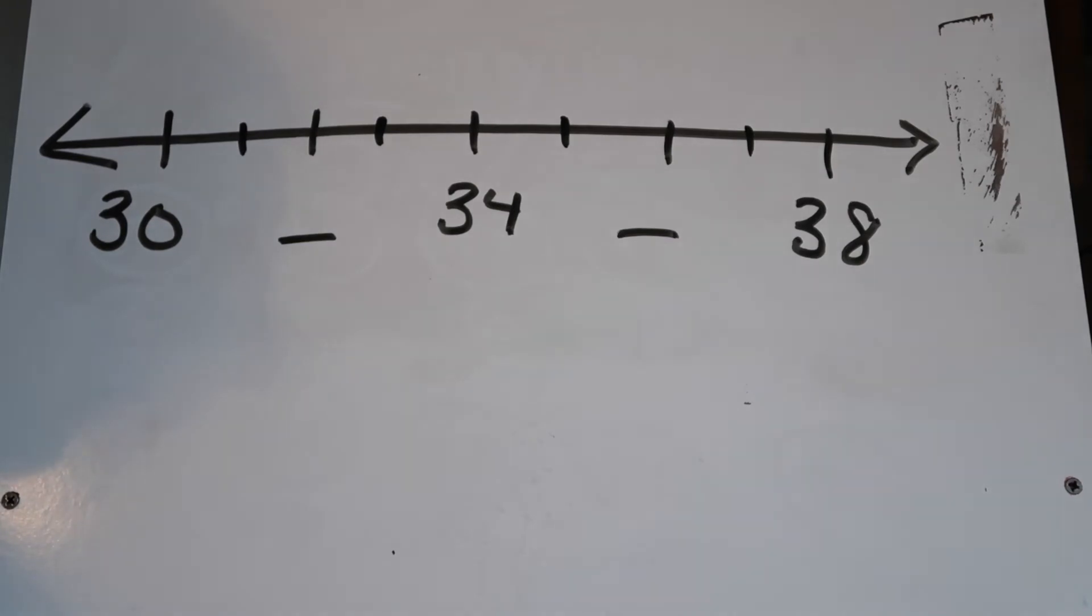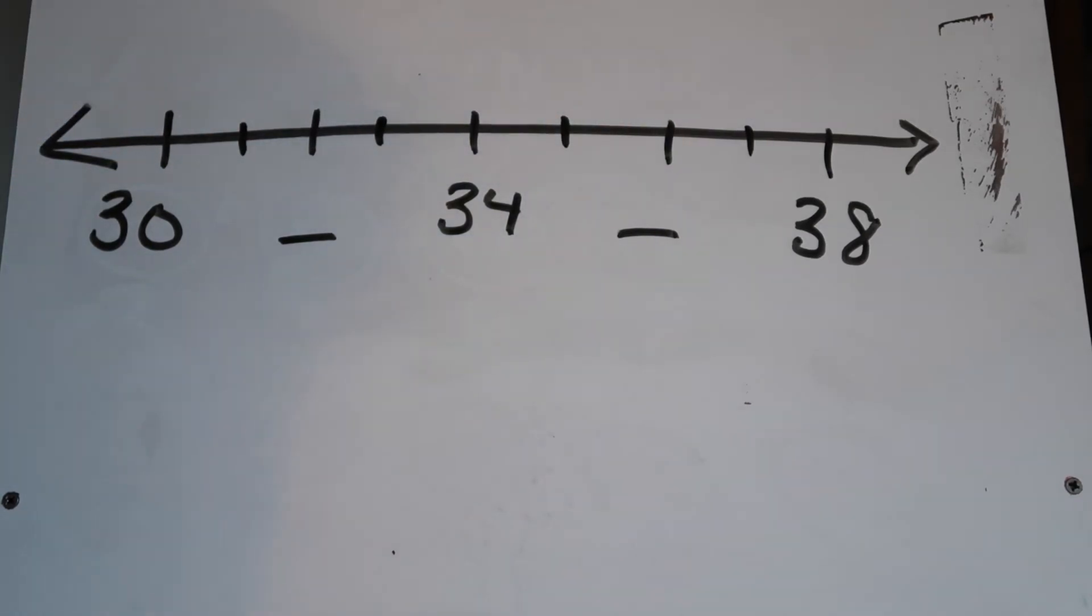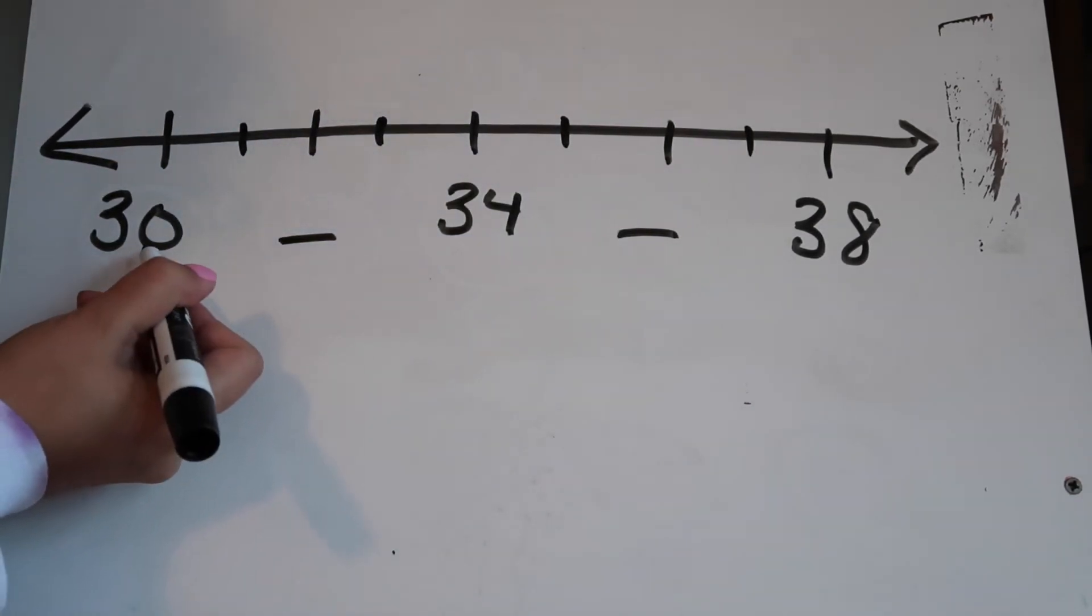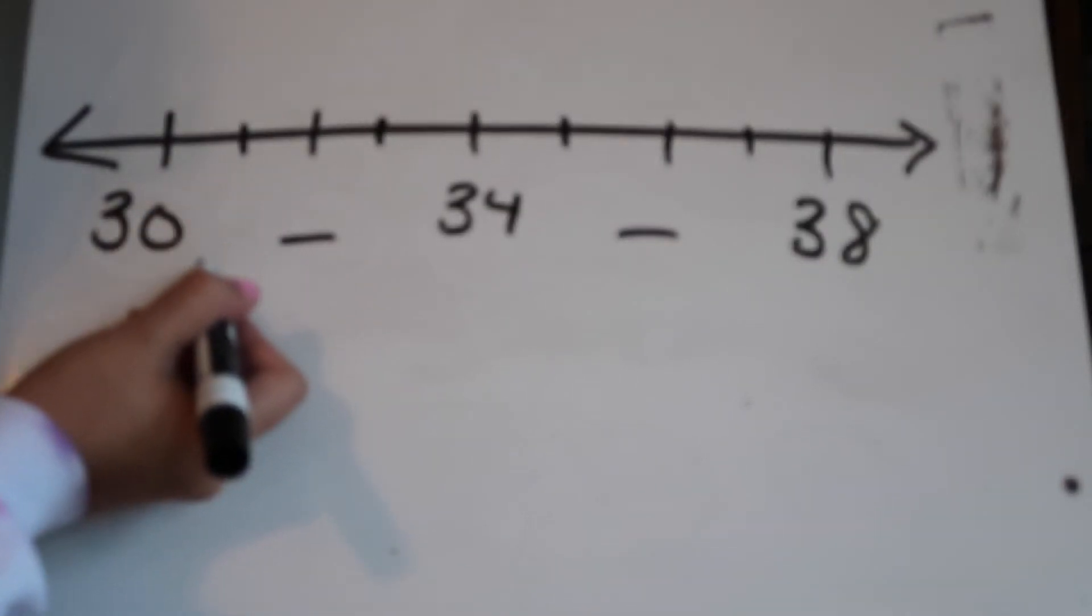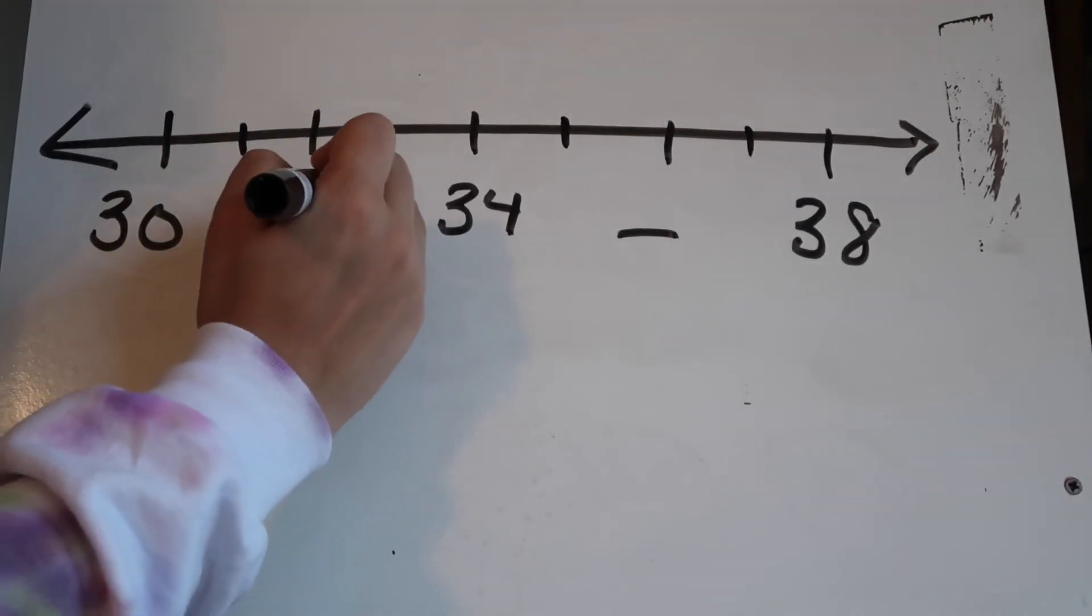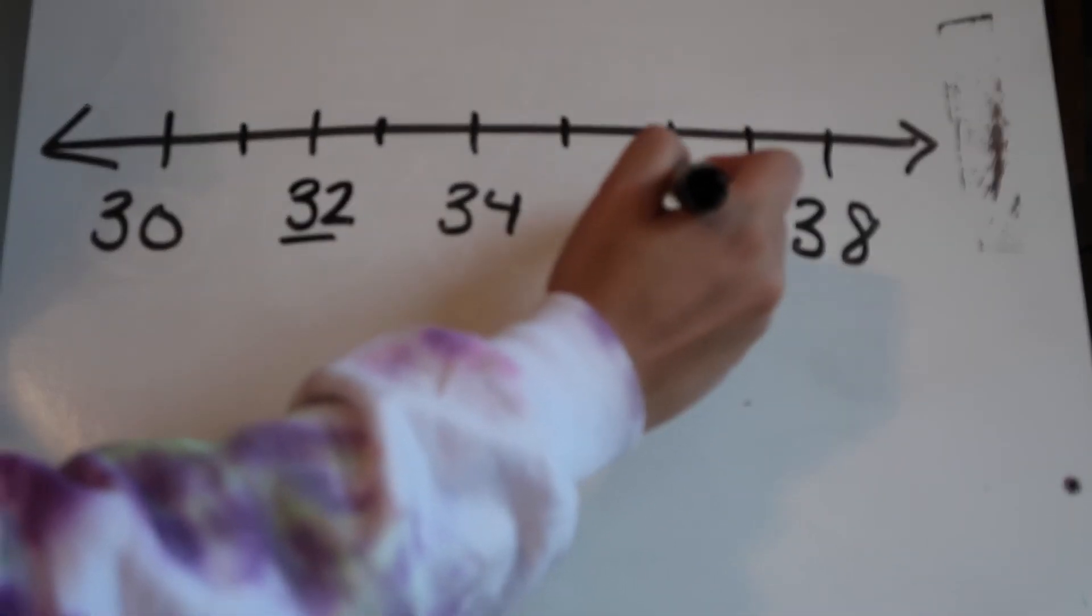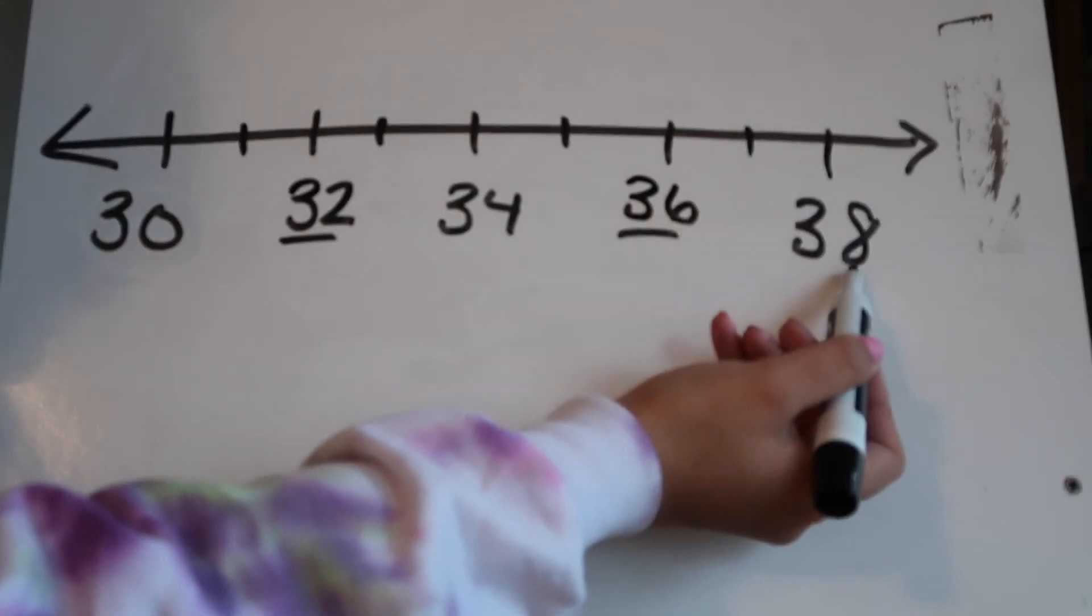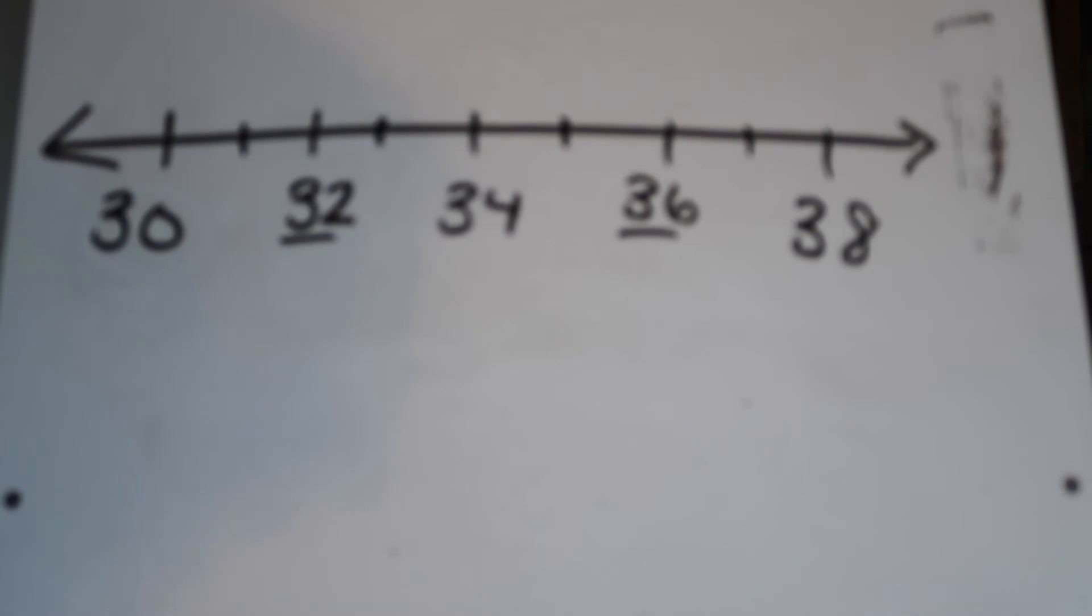Our next example is going to be a number line. I made these little notches to help me count. If I have 30, I know that 31 comes next, but one is not one of my magic numbers, so I have to go next: 30, 31, 32, 33, 34, 35, 36, 37, 38. Here are my magic numbers: 0, 2, 4, 6, 8. So I know I am correct.